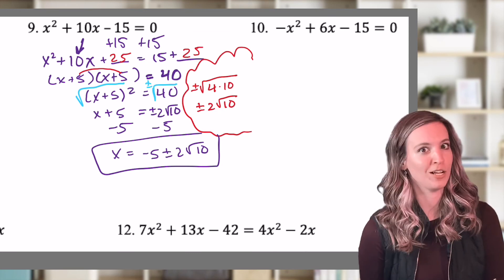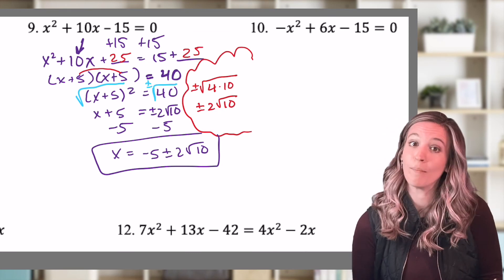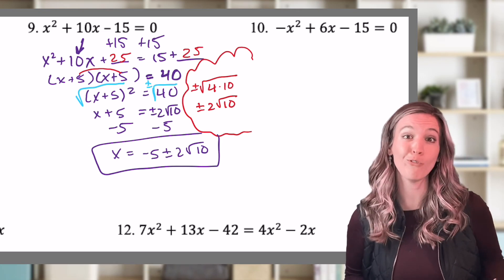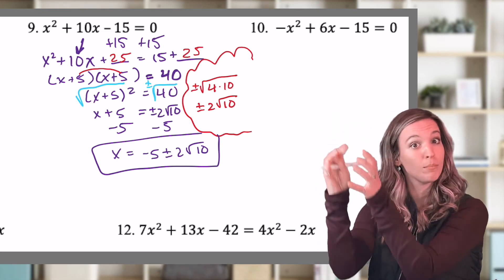Did you get negative 5 plus or minus 2 root 10? Awesome. Be sure you simplify that radical. So if you accidentally left square root of 40, make sure you do a side note where you simplify that radical.